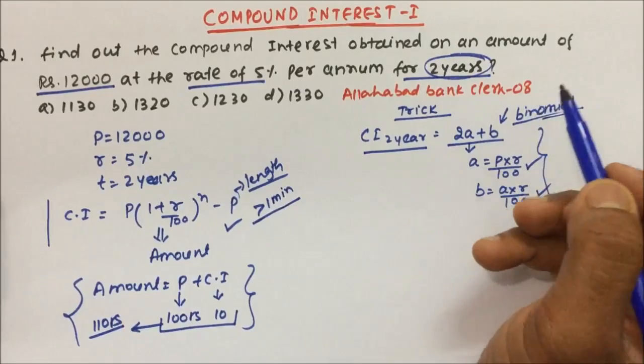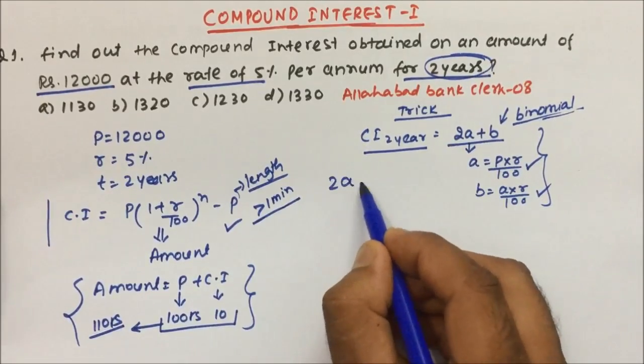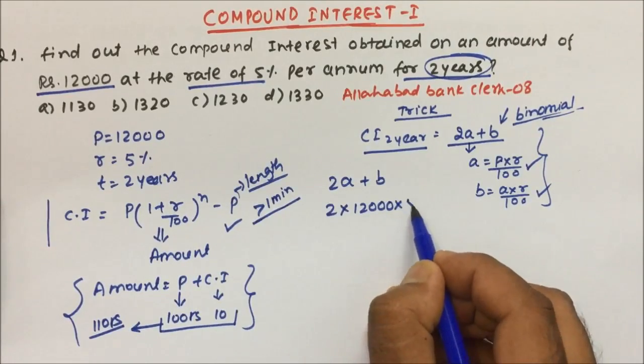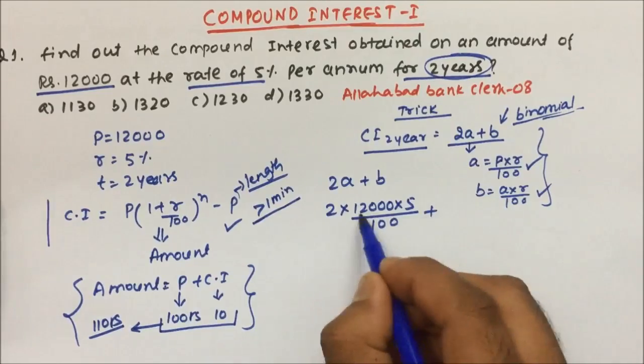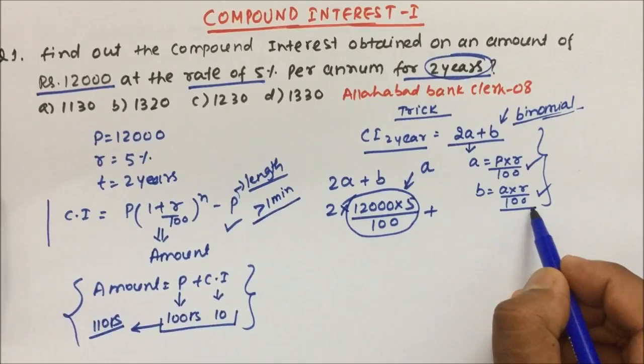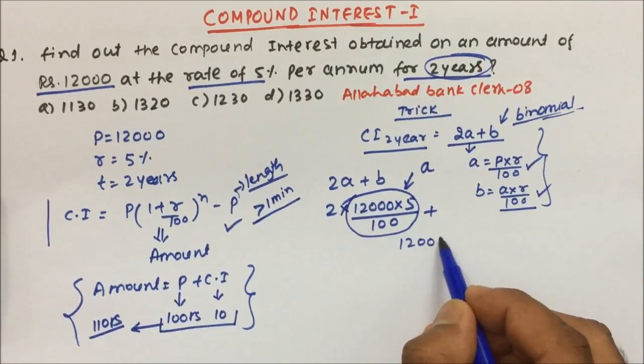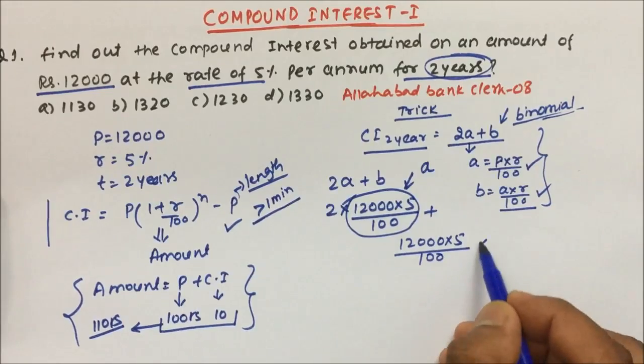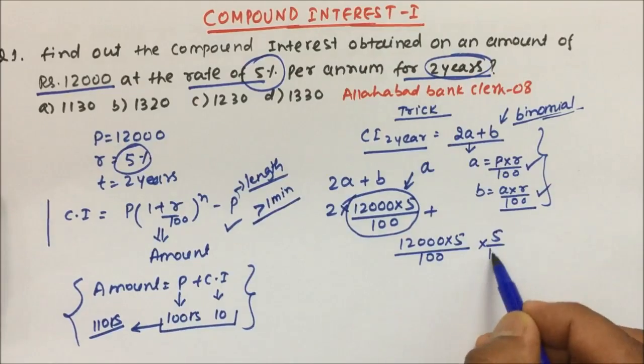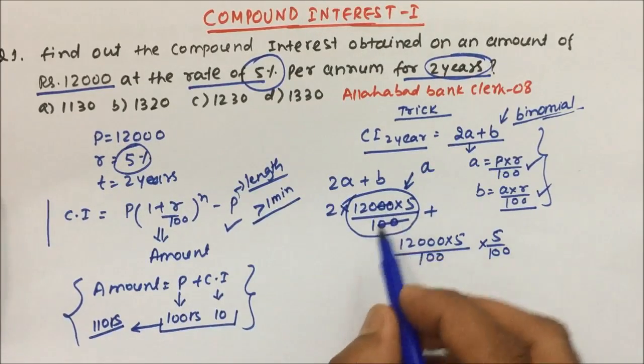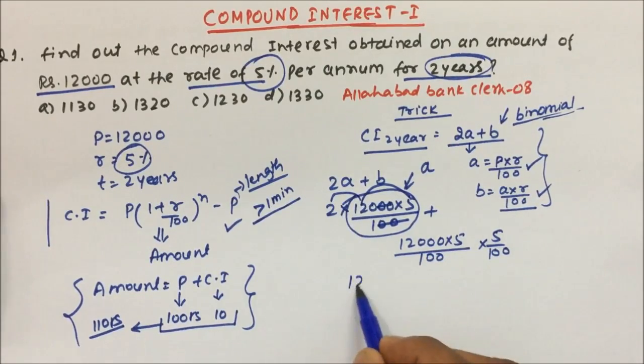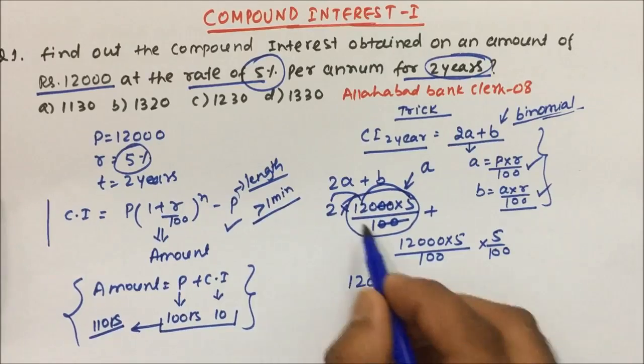Now use the formula to calculate compound interest for 2 years because they are asking to calculate for 2 years. So 2a plus b, right? 2 into what is P? P is 12,000, what is R? R is 5, and divide by 100. So 2a, so this whole thing is nothing but my a. What is b? B equals a into R by 100, so a is what? 12,000 into 5 by 100 into R by 100. R is nothing but what? 5%, which we have already written here, into 5 by 100. Now 2 zeros will cancel to zero.